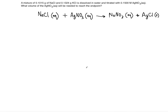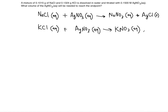We need one more reaction because we also dealt with the potassium chloride, which will also be titrated by the same silver nitrate. So we write a second reaction: potassium chloride plus silver nitrate gives potassium nitrate plus silver chloride solid.